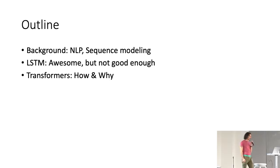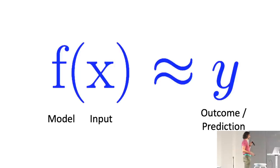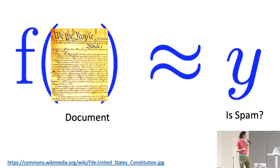So the outline for this talk is to start out with some background on natural language processing and sequence modeling, and then talk about the LSTM, why it's awesome and amazing, but still not good enough, and then go into transformers and talk about how they work and why they're amazing.